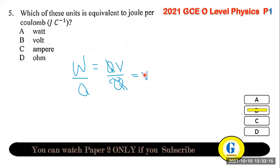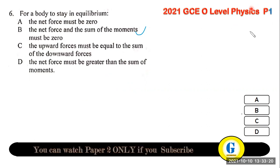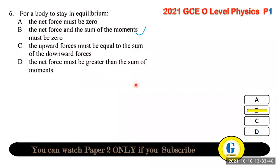Question 6: for a body to stay in equilibrium, two conditions are required. First, the net force (algebraic sum of forces) must equal zero. Second, the sum of moments must equal zero about any point or axis. The answer is B.